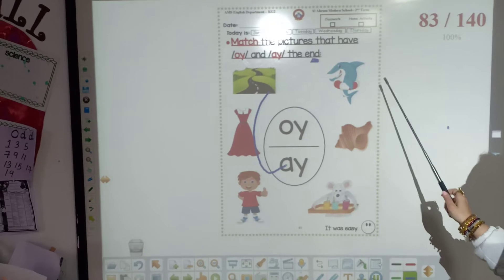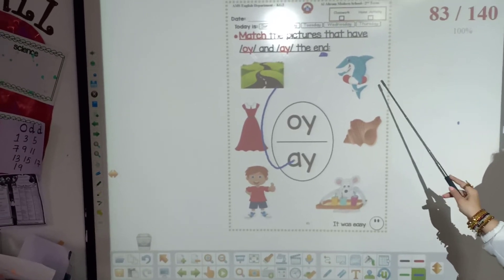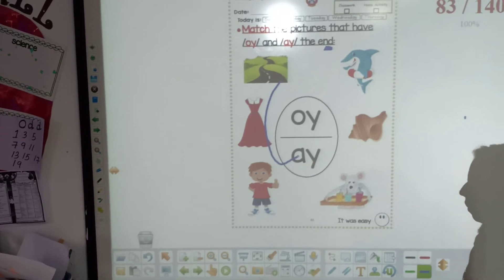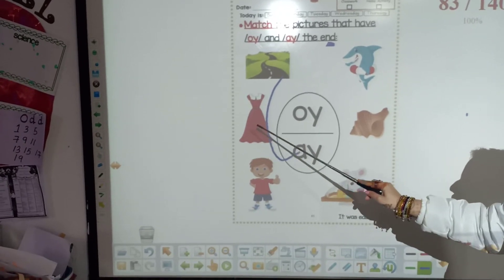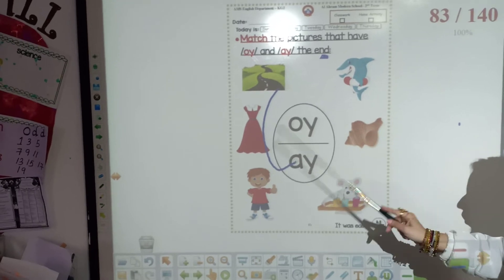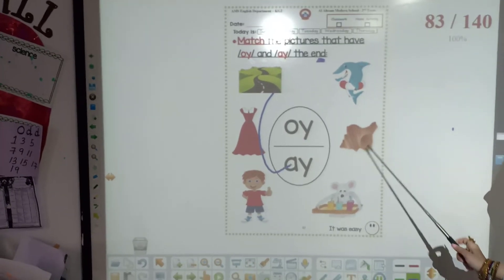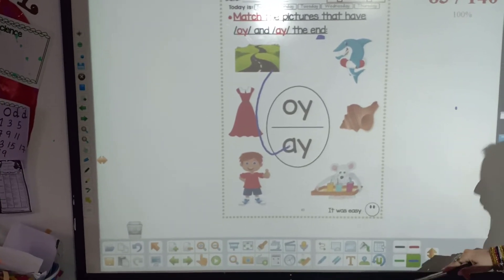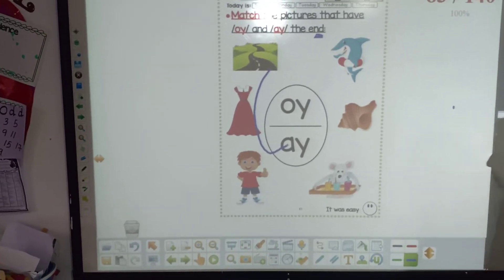The next one is shark. Shark has oy or ay? No. So, leave it as it is. The next one, dress. Dress has oy or ay? No. We are going to leave it as it is. Show. Show has oy or ay? No. So, we are going to leave it also as it is.